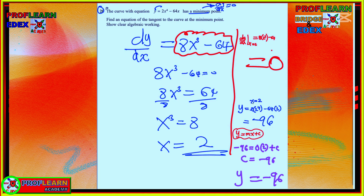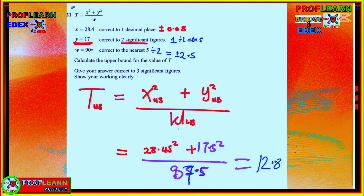At the turning point x = 2, substitute back into the original equation to get y = −96. To find the equation of the tangent, use y = mx + c. The gradient m = 0, x = 2, y = −96, so c = −96. The equation of the tangent at the minimum point is y = −96.